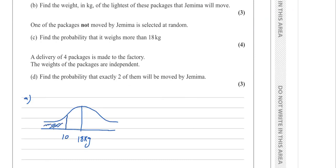We know that in the normal distribution bell curve, the total area under the curve is 1 — the total probability is 1. To find P(W < 10), we first convert to a z-value using the formula z = (x − μ) / σ.